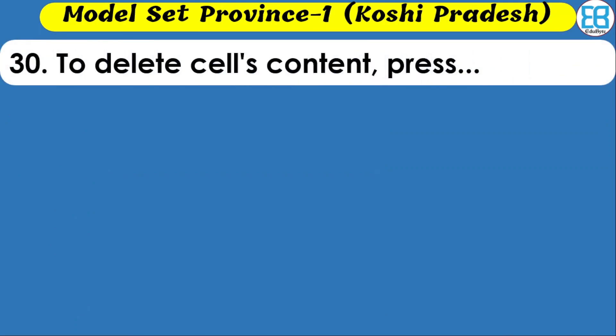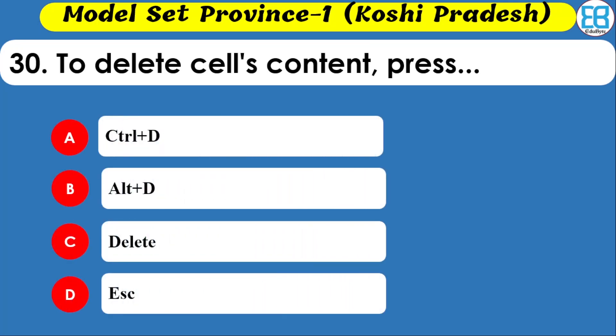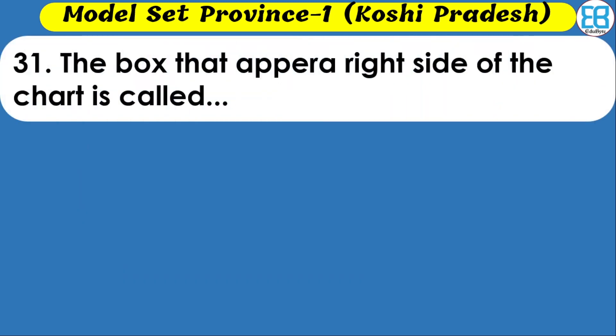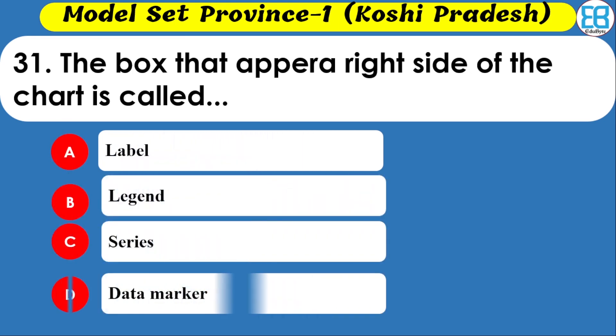To delete a cell's content in a spreadsheet, press which key? Options are Delete, Control Delete, RT Delete, and ESC. The correct option is Control Delete. The box that appears on the right side of a chart is called the legend.